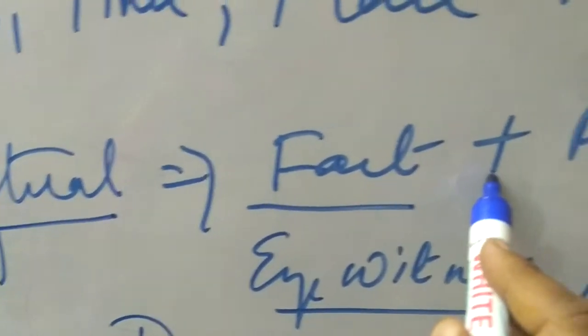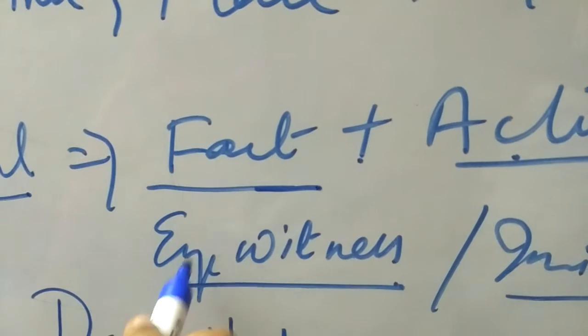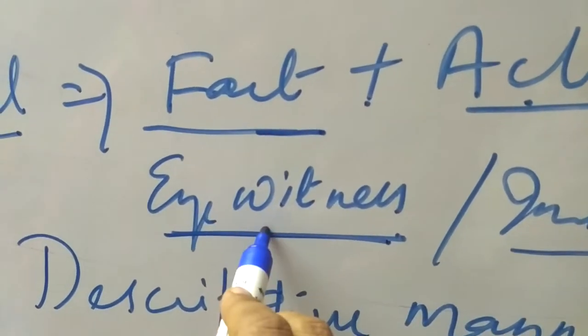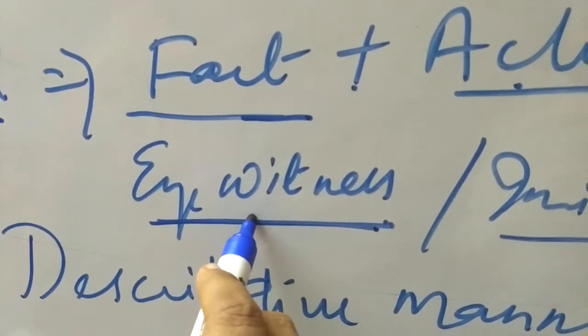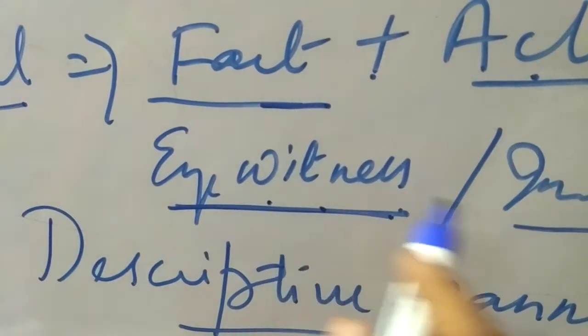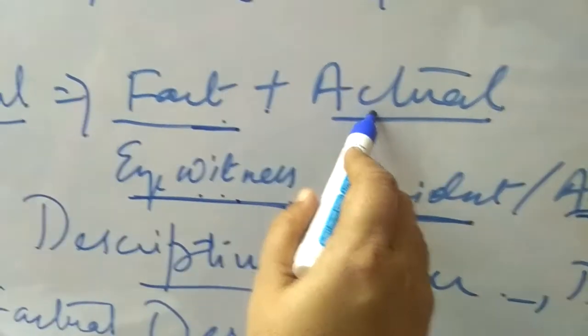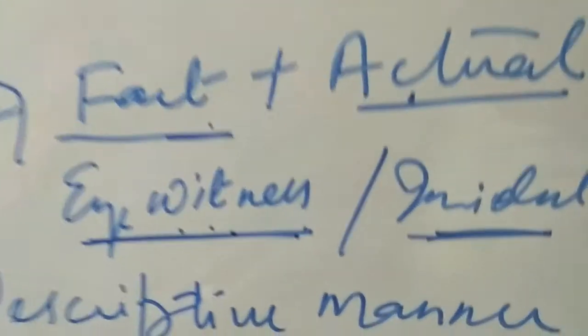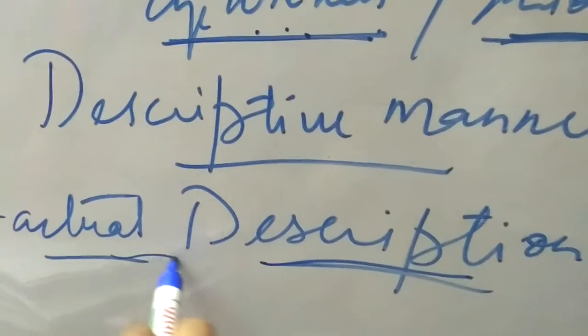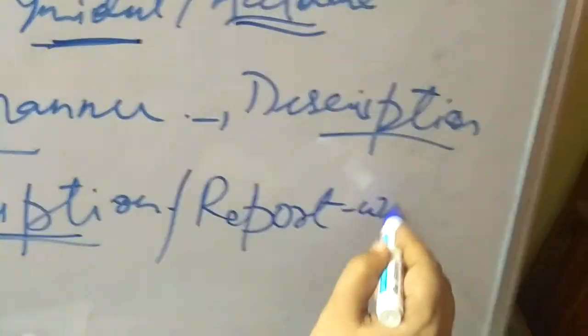So to recap: report writing is otherwise known as factual description. Factual description means fact plus actual. The fact is the real truth which you have seen with your own eyes and you are the eyewitness of. That fact, written in a descriptive form, comes under factual description, which in turn comes under report writing.